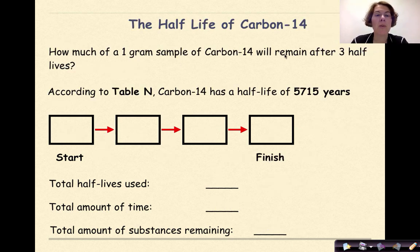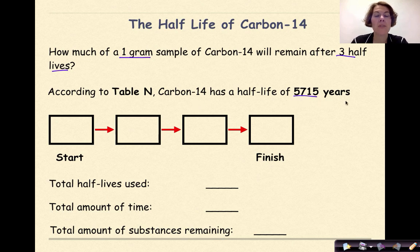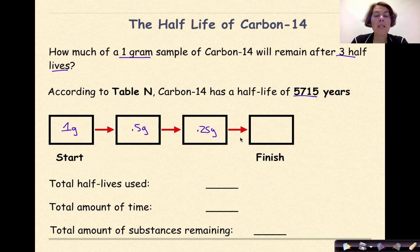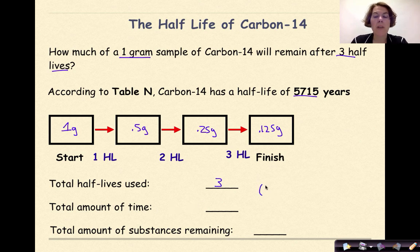Let's look at another example: the half-life of carbon-14. How much of a 1 gram sample of carbon-14 will remain after 3 half-lives? According to Table N, carbon-14 has a half-life of 5,715 years. Starting with 1 gram: one half-life goes by, leaving 0.5 grams; another half-life gives us 0.25 grams; and finally our third half-life brings us down to 0.125 grams. The total time is 3 half-lives times 5,715 years, which equals 17,145 years. The total amount of substance remaining is 0.125 grams.